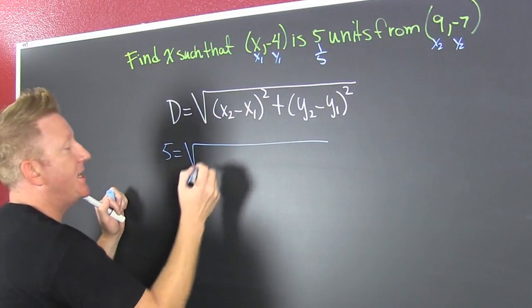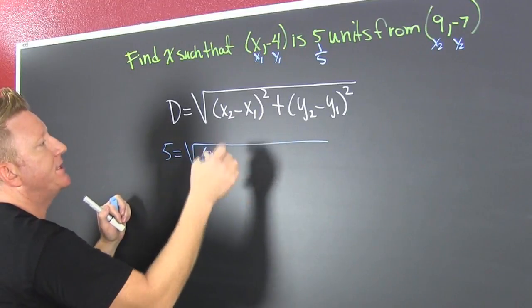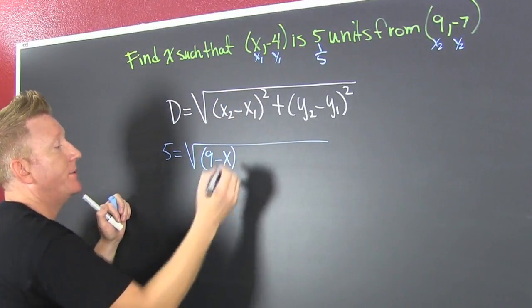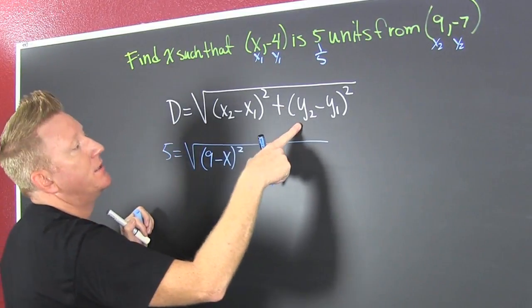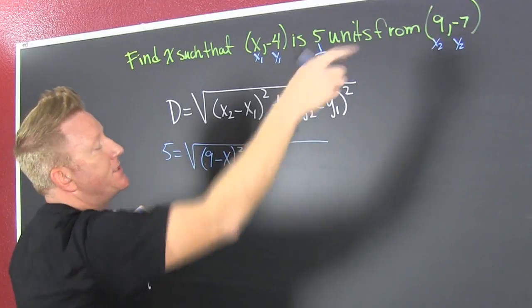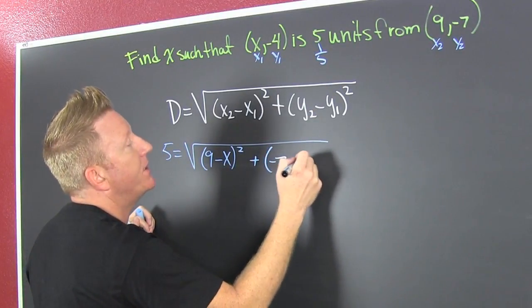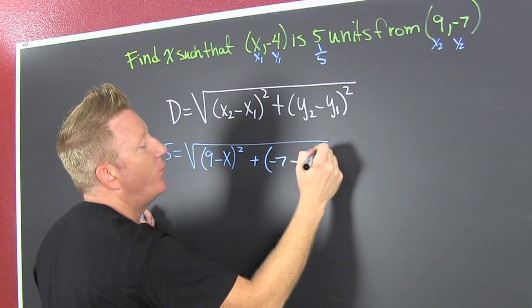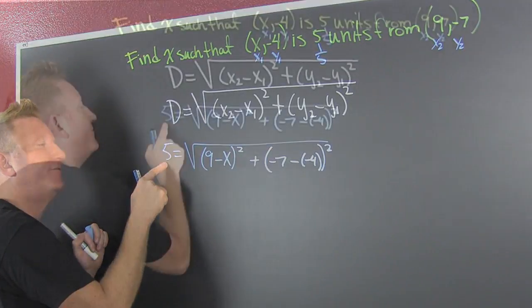There is a nine minus, oh, look at that. I'm just going to call it X. Maybe you should have called it a different number. Anyway, we're here and that Y2 is a minus seven. And then we're going to go ahead and we're going to subtract off our Y1, which is a minus four.